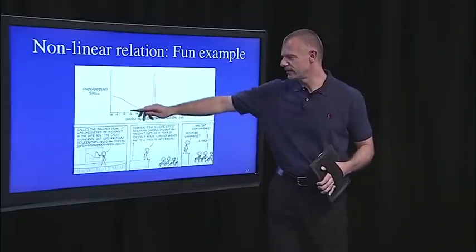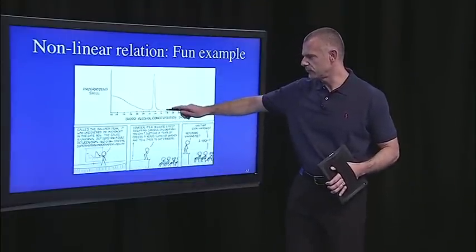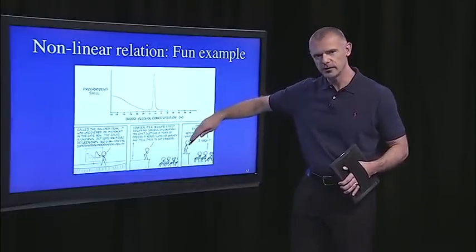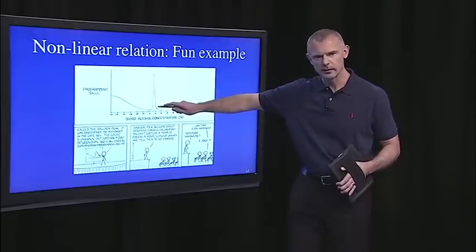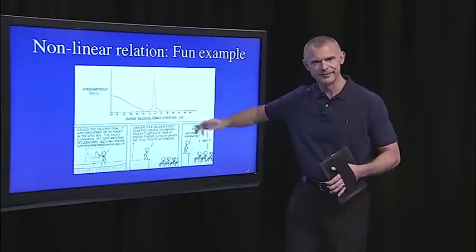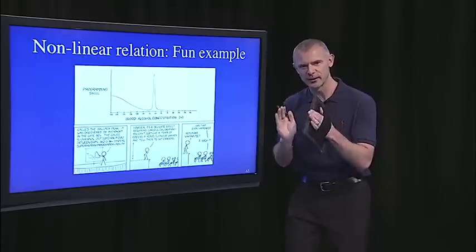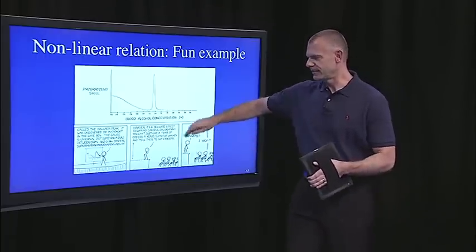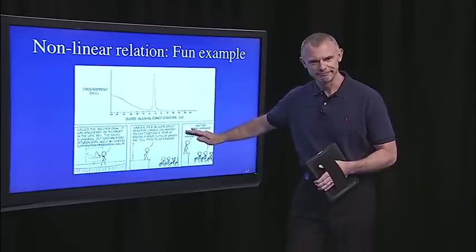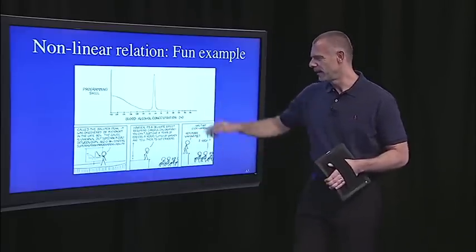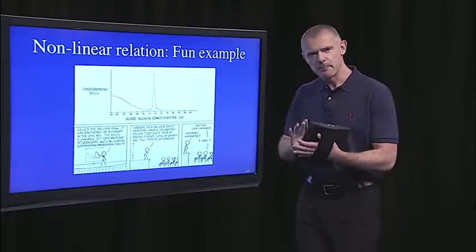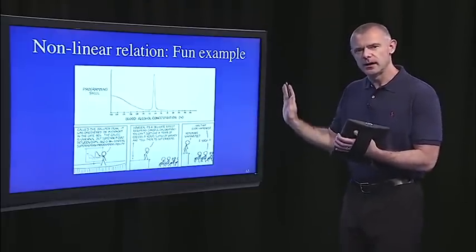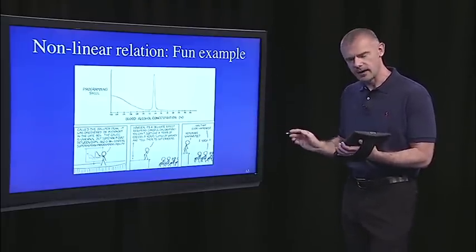So the idea here is that as blood alcohol concentration increases, initially there's a bit of a drop in programming skill, but then there's this sweet spot. If you get just the right buzz, then you can really write code, right? Of course this is a cartoon. Don't take this seriously. And then of course it drops off quickly. But that's obviously a function that's not linear.